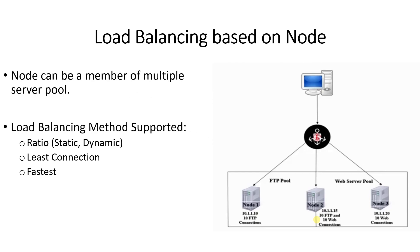Now comes load balancing based on node. A node can be a member of multiple server pools. As you can see, node one is a member of the FTP pool, but node two is a member of both the FTP pool and the web server pool. And node three is a member of the web server pool. Load balancing based on node considers the total connections forwarded to a server device, whether from one server pool or from multiple server pools.